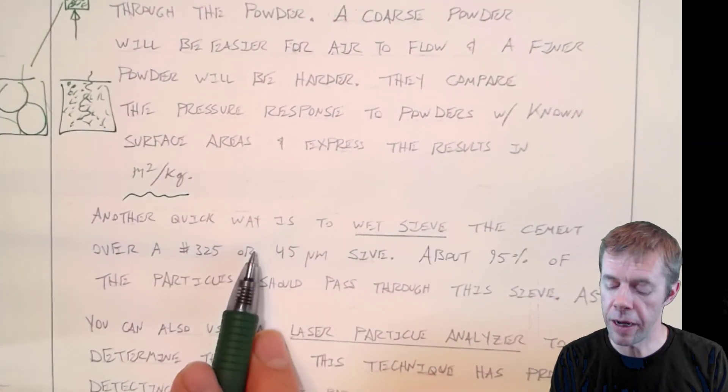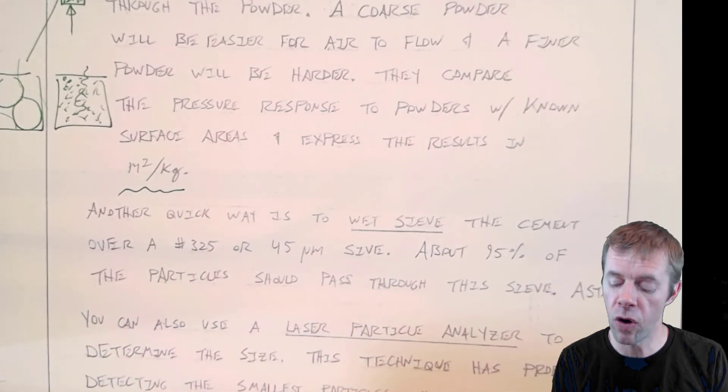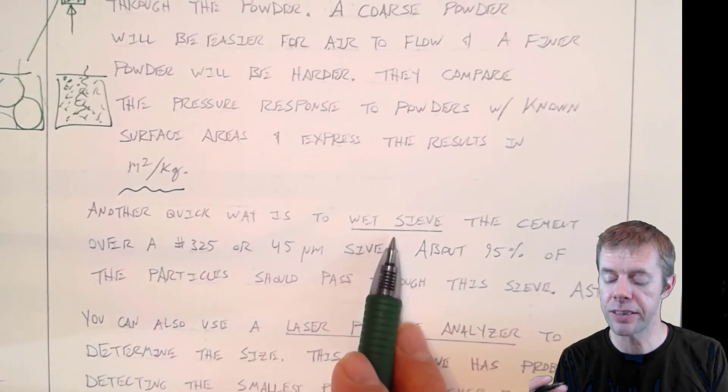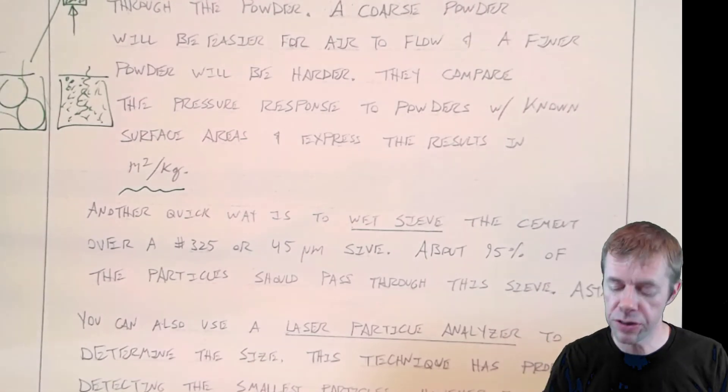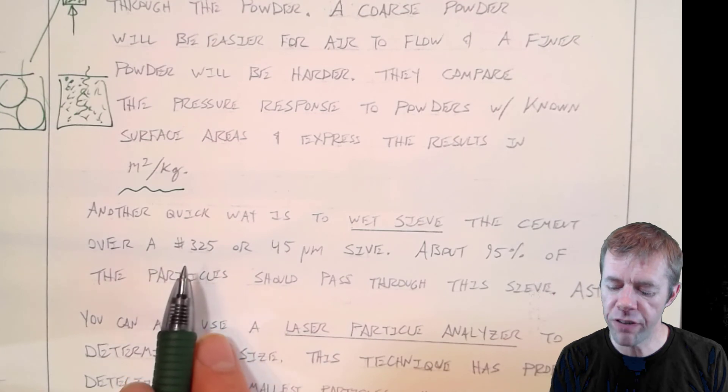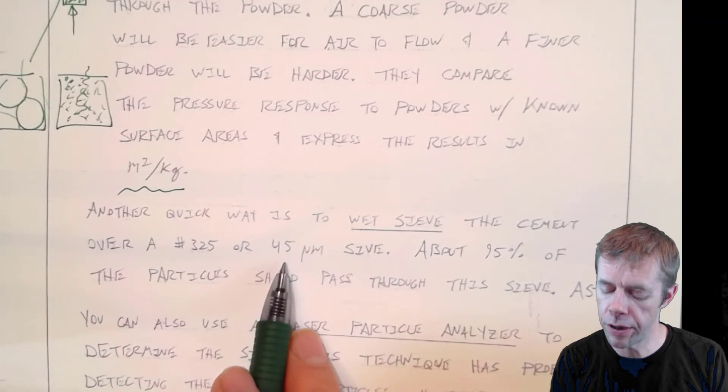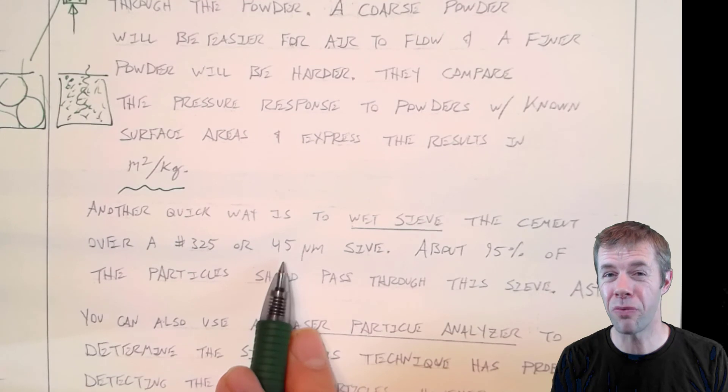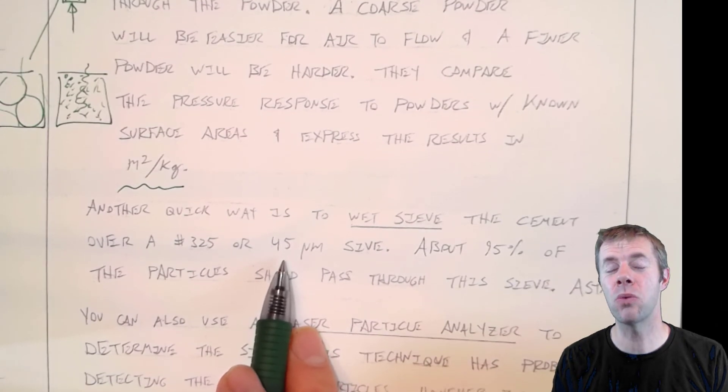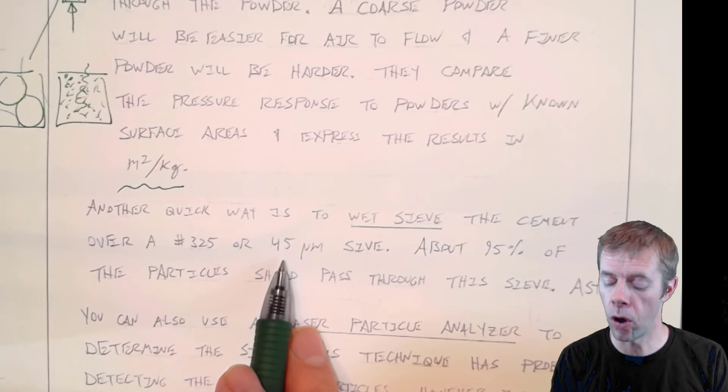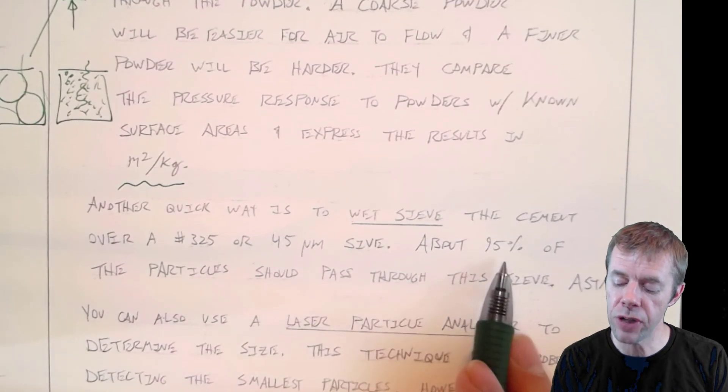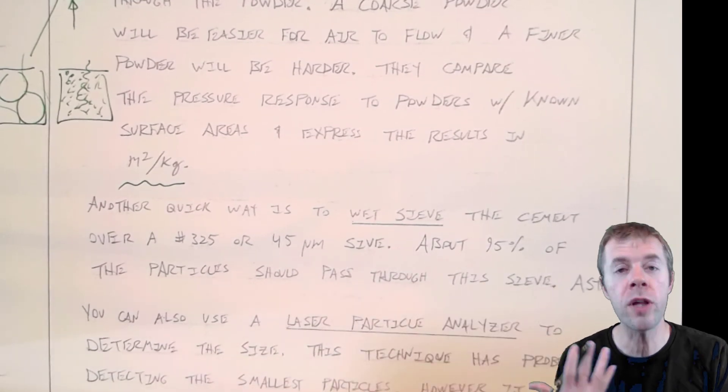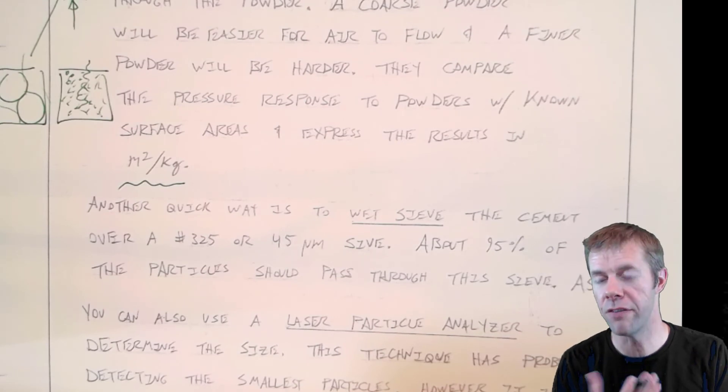Another quick way to get this information is where they wet sieve cement. They take cement and force it through a sieve, a very small sieve, a number 325, with about a 45 micron opening size. They do it not with water but with other liquids that won't react with the cement, like acetone or isopropanol, and they try to see what's caught. About 95% of the particles should go through. Only about 5% should be caught on the sieve.